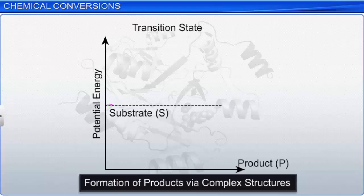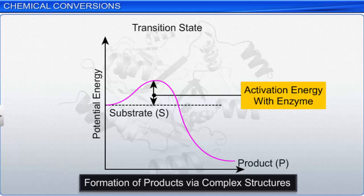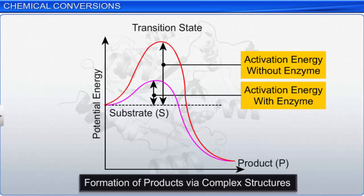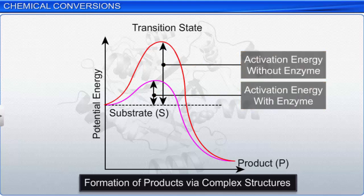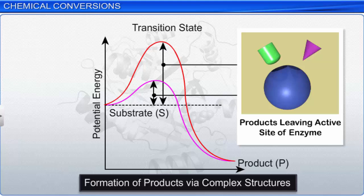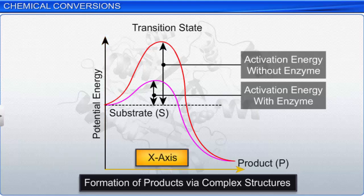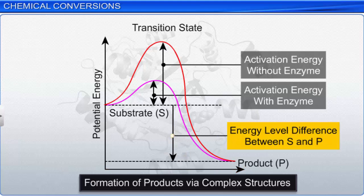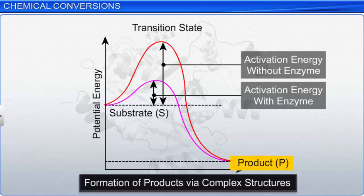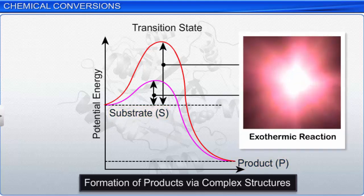This graph shows how enzymes lower the activation energy during reactions, thereby increasing the rate of reaction. Activation energy is the minimum amount of energy required for the chemical reaction to take place — in other words, the minimum amount of energy required by the substrates to form products. The y-axis represents the potential energy content while the x-axis represents the formation of products via complex structures. Notice that there is an energy level difference between S and P. If P is at a lower level than S, it implies an exothermic reaction releasing heat energy, meaning an external supply of heat energy is not required.